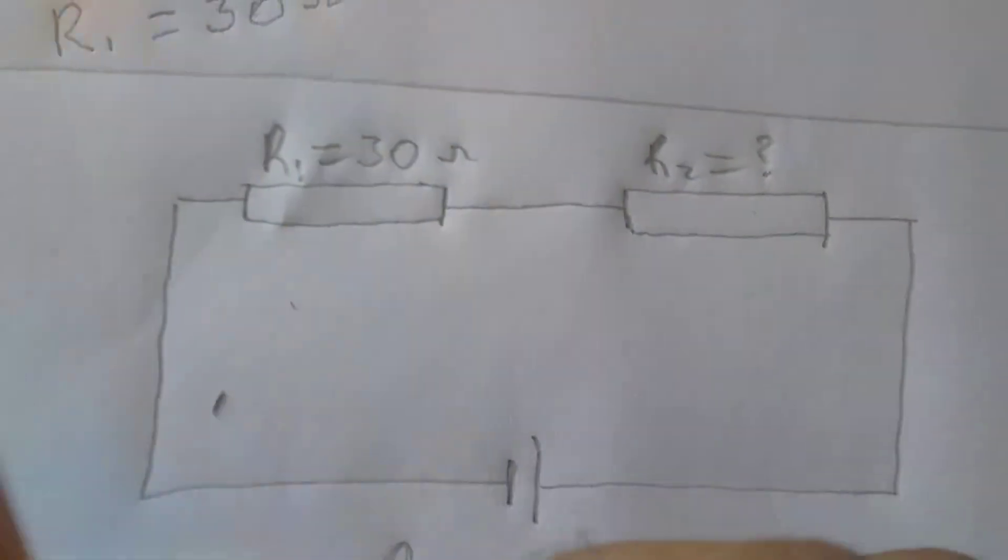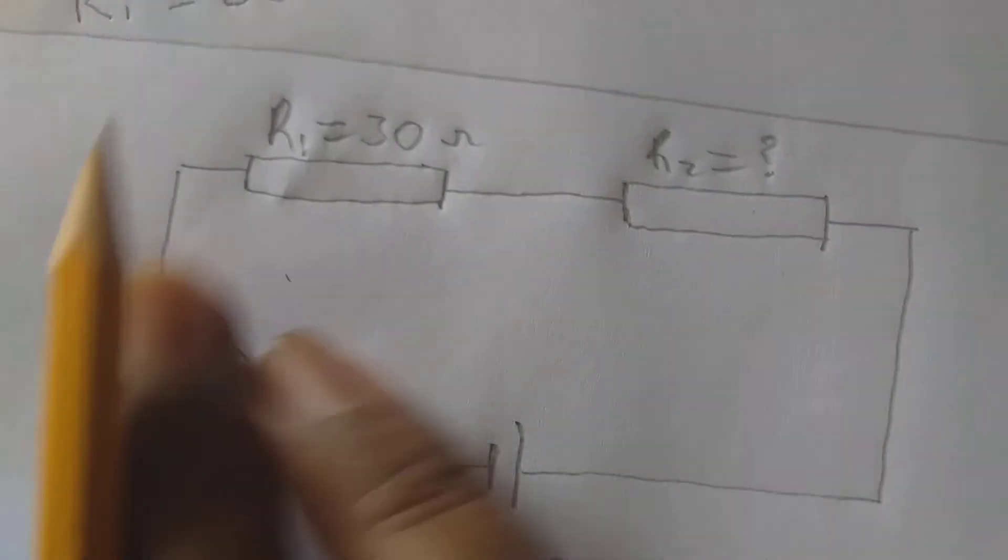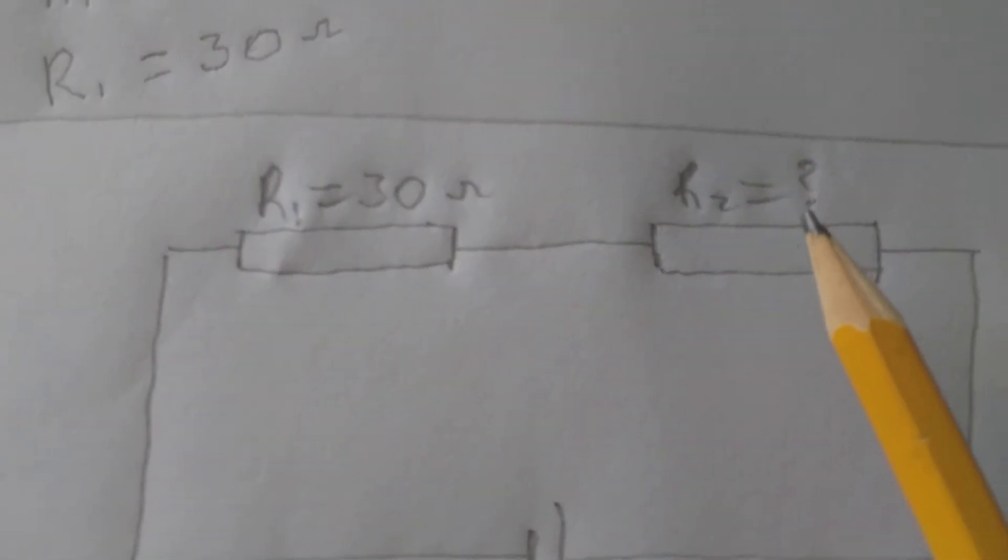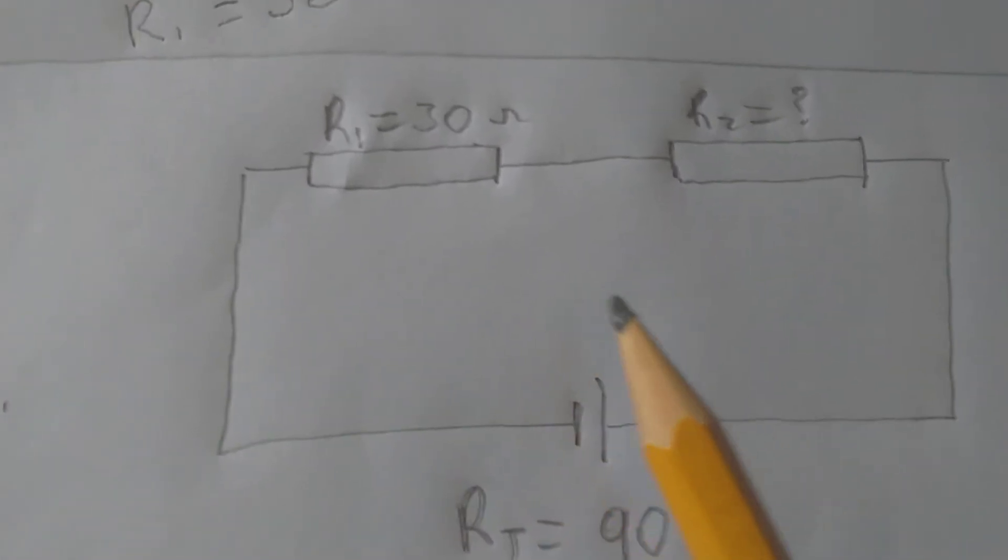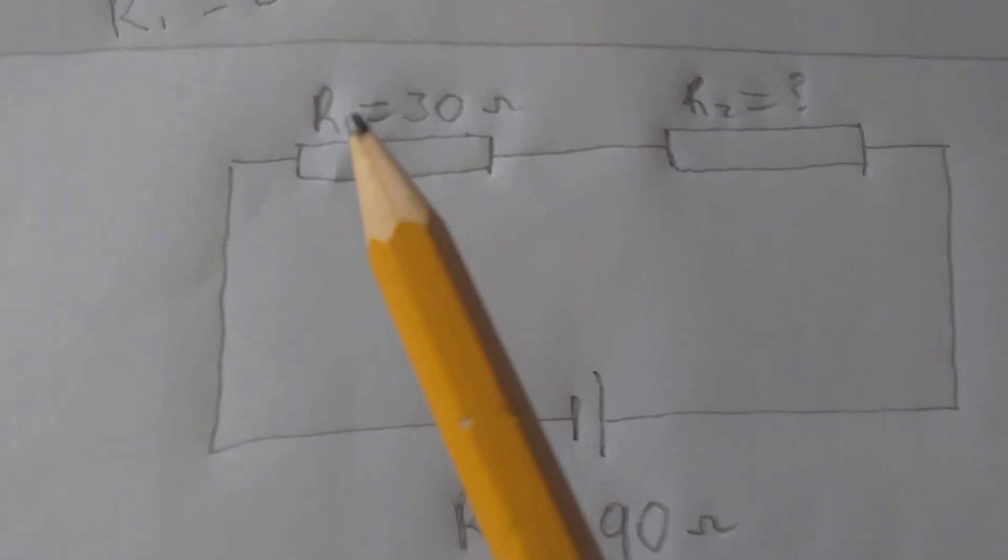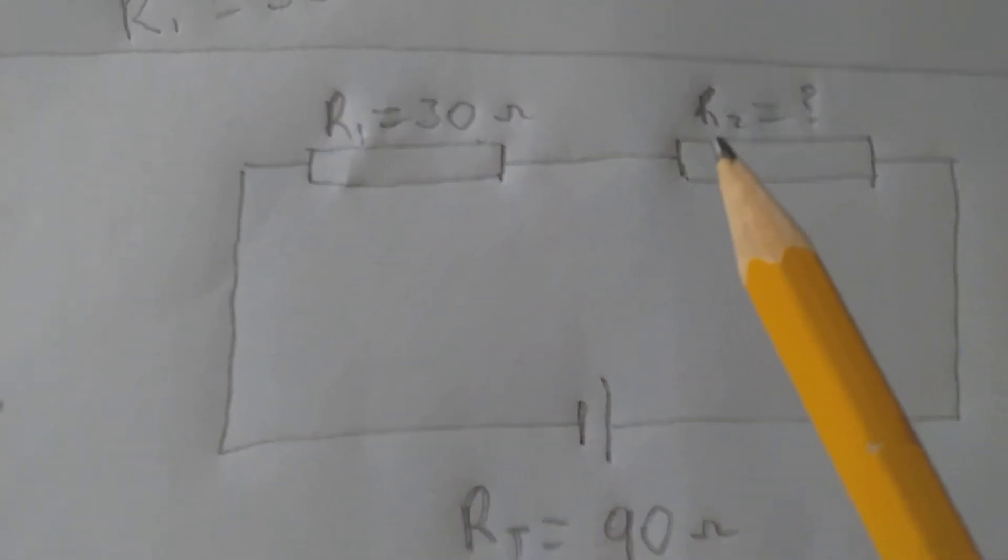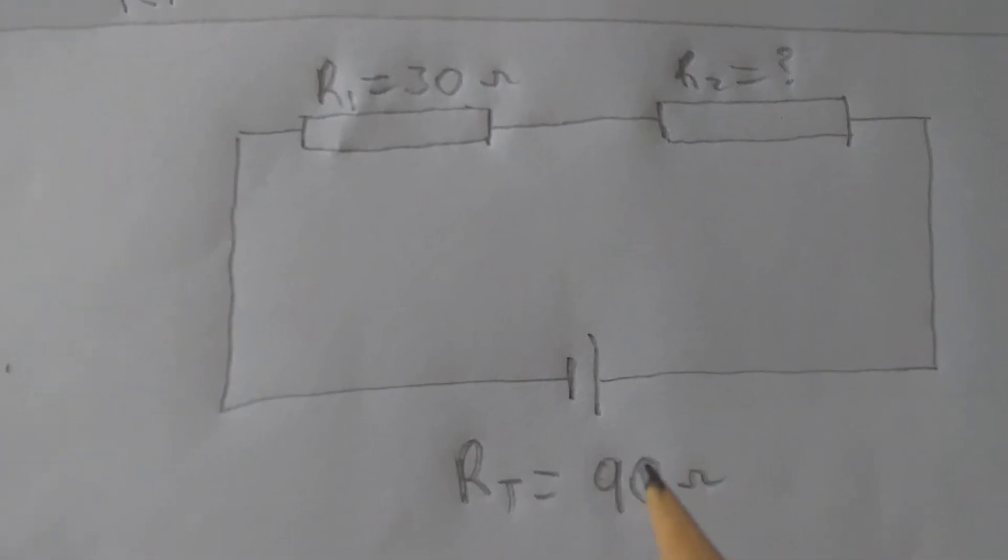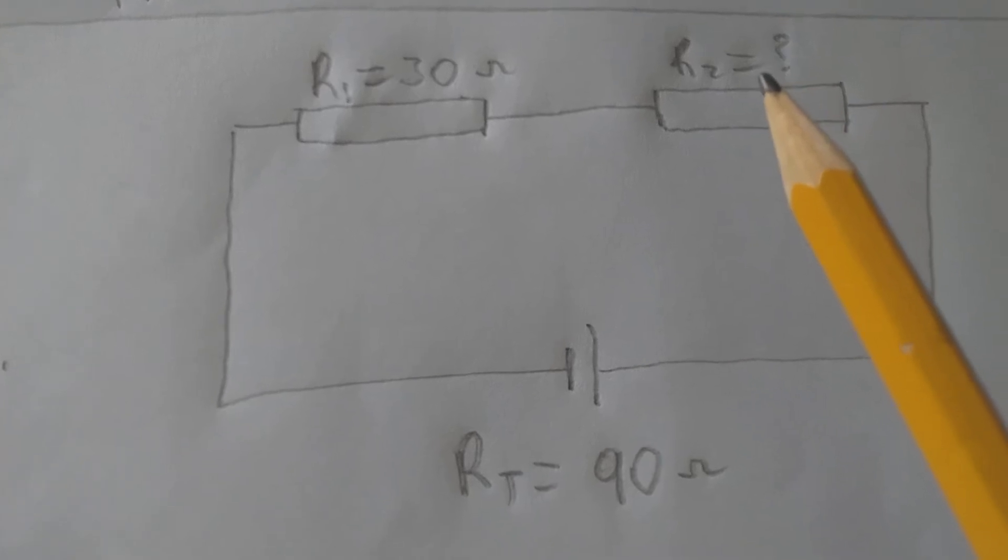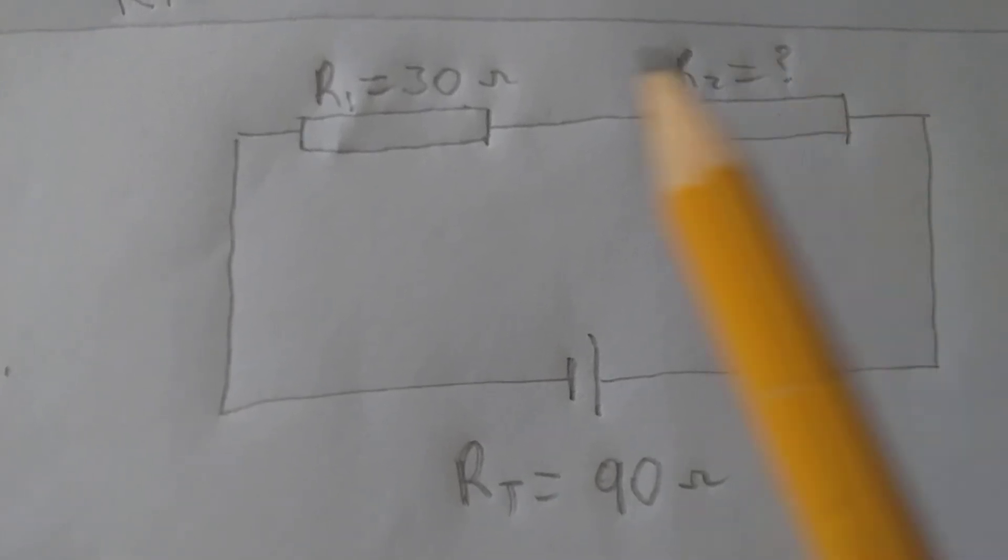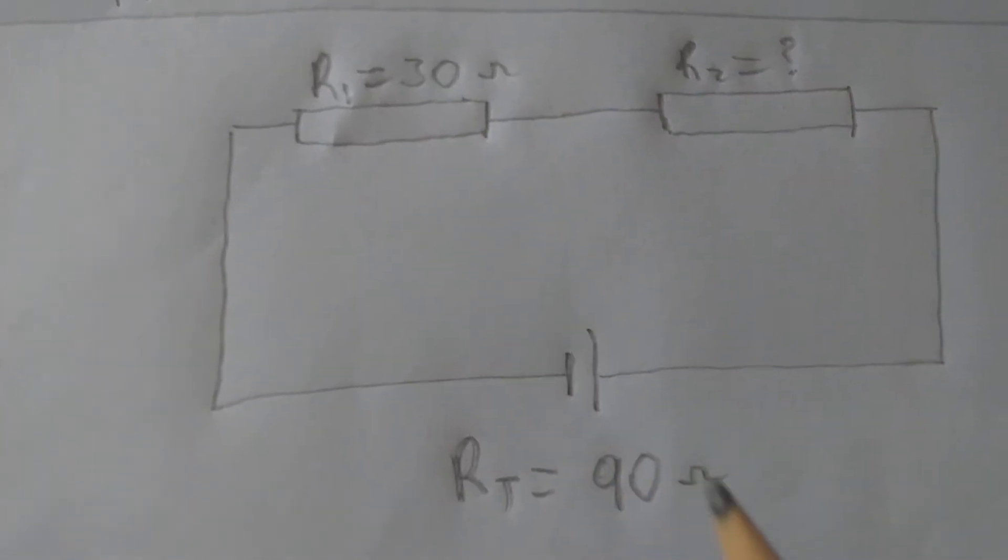So in this one we are asked to find R2. Now here we don't have the value for R2, which is a question mark. In previous videos we learned that if you add R1 plus R2 you should end up with the total, which is 90 here. So we need to find out which number you add with R1 to get 90.